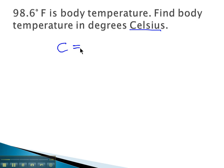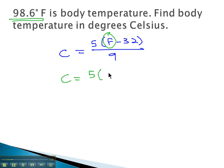So we're looking for Celsius. We're going to use that formula 5 times Fahrenheit minus 32 over 9. Plugging in 98.6 for the Fahrenheit, we have 5 times 98.6 minus 32 over 9.